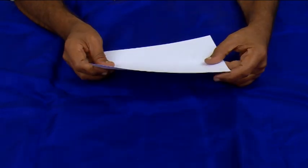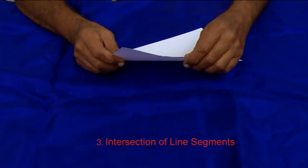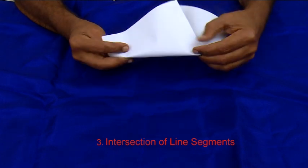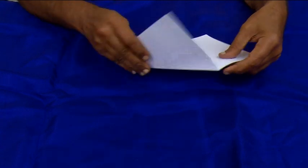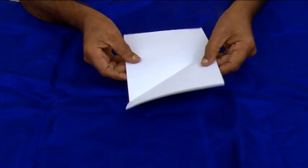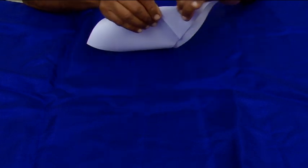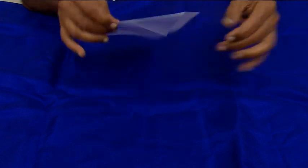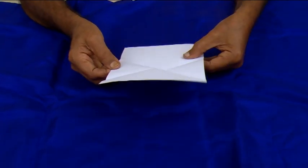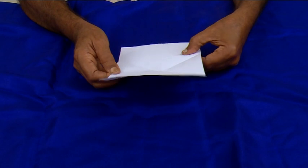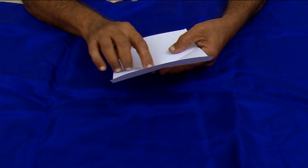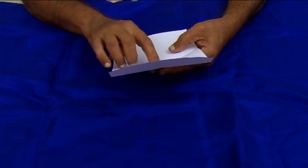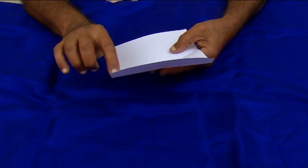Two lines intersect at only one point. You can see two line segments here — this is one line segment, then another line segment. So this is called the intersection of two line segments. They intersect at one point. The line segment, as you can see clearly, has only length — no breadth, no height.